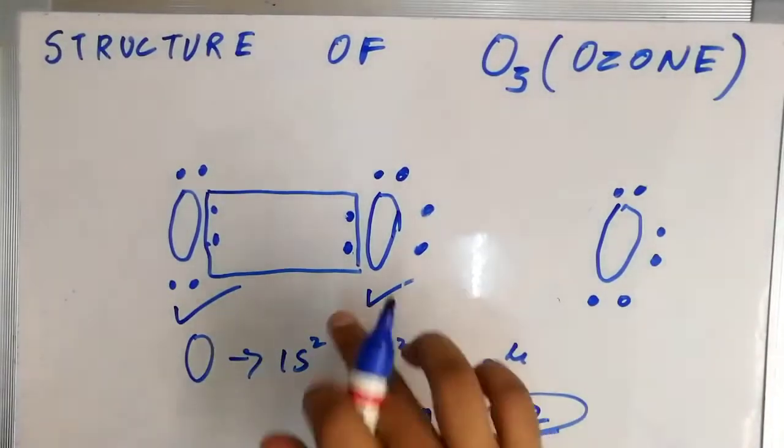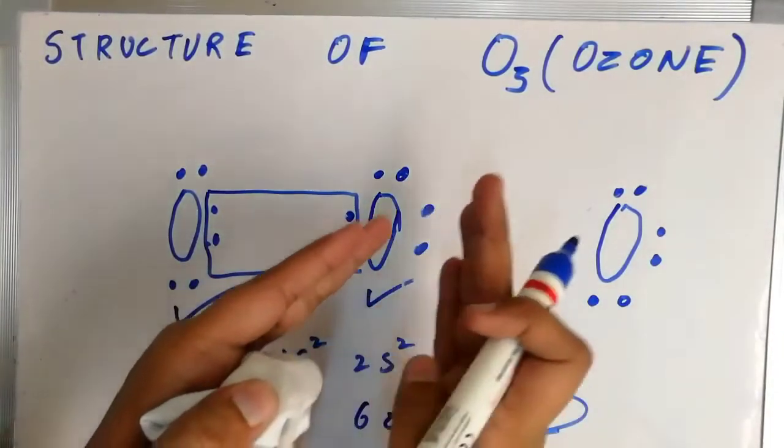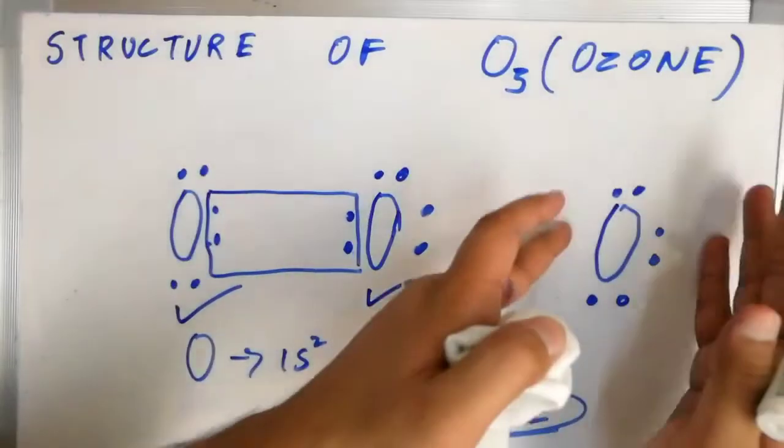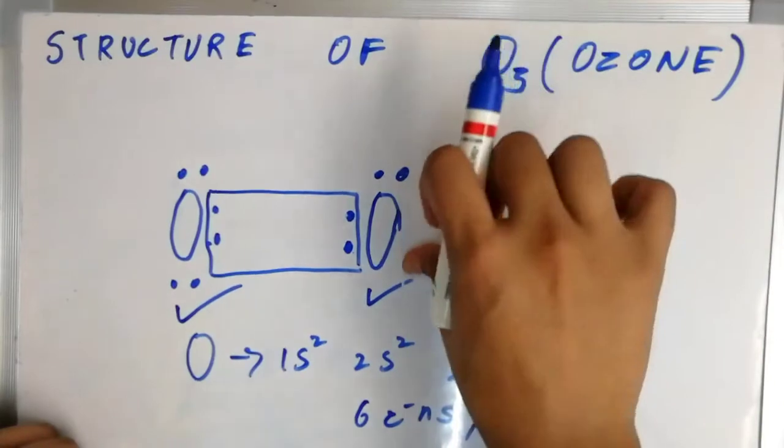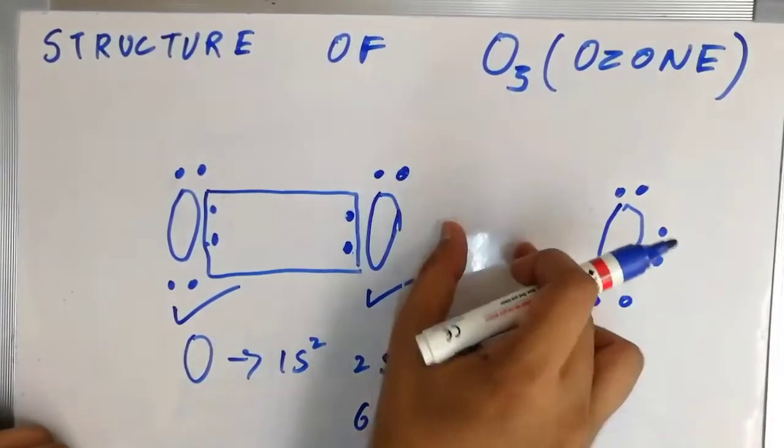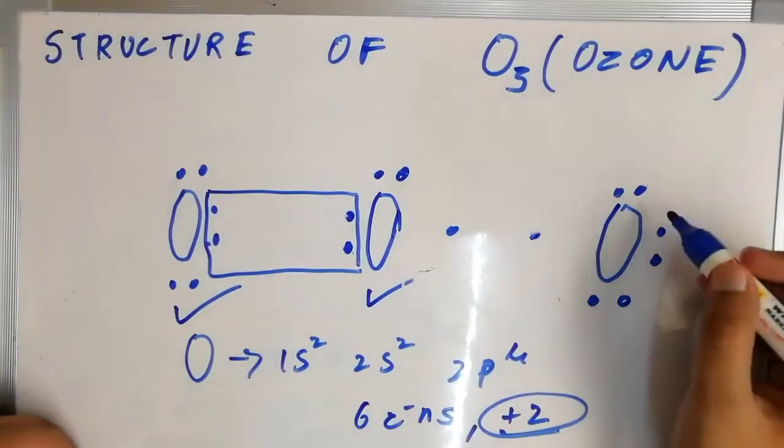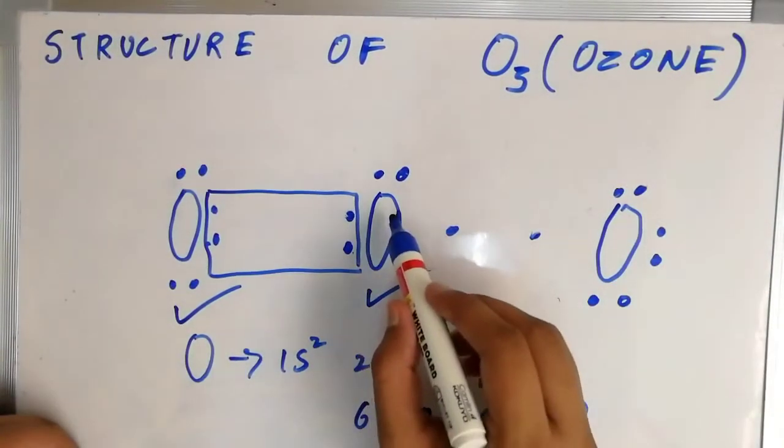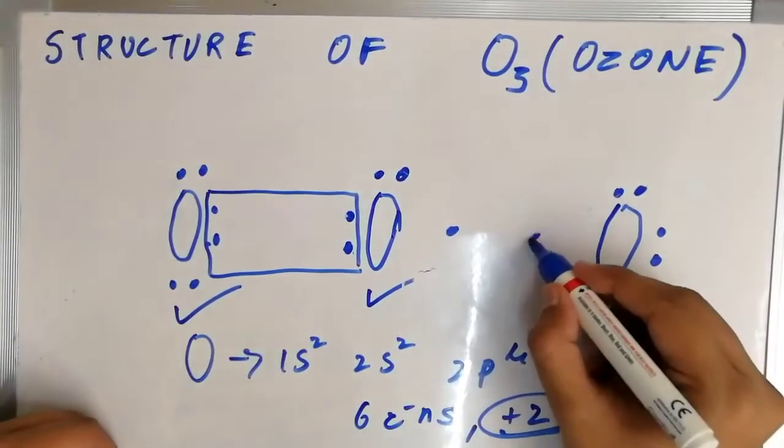So what this oxygen atom will do is he will supply these two electrons to this oxygen atom and forming a coordinate bond. So what will happen is these two electrons are kept here, here and here. And now this oxygen atom has one two three four five six seven eight. That was already known to us before also.